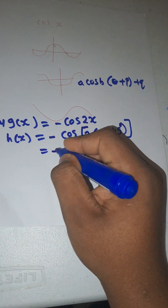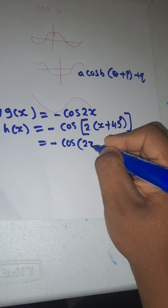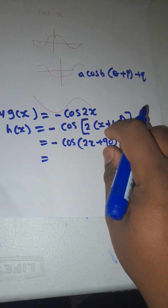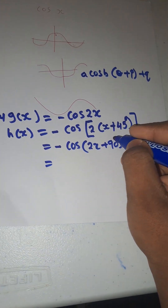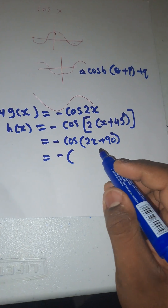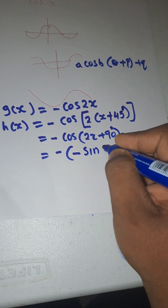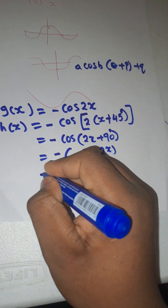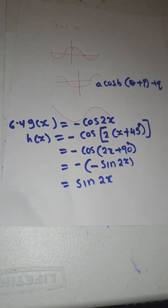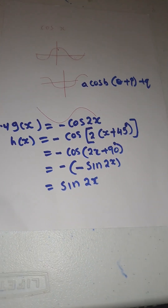Expanding: negative cos(2x + 90). Now using the identity, cos(θ + 90°) = negative sinθ, so this becomes negative times negative sin(2x), which gives positive sin(2x). So the new equation of h(x) = sin2x. Follow that order - it is very important.